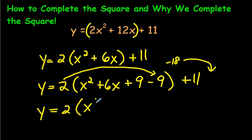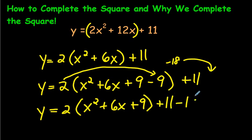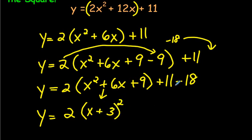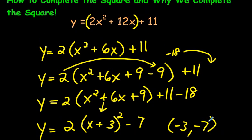So we write it again, keeping the positive 9 inside, and on the outside we have plus 11 minus 18. We keep the 2 out front. Now let's turn this perfect square trinomial into factored form — take the square root of 9, which is 3, take the sign that you see, which is plus, squared. Then 11 minus 18 gives us minus 7. So we know that the vertex of this would be negative 3 and negative 7. If you were to graph this using Desmos, you would end up getting that as your vertex. That is completing the square.